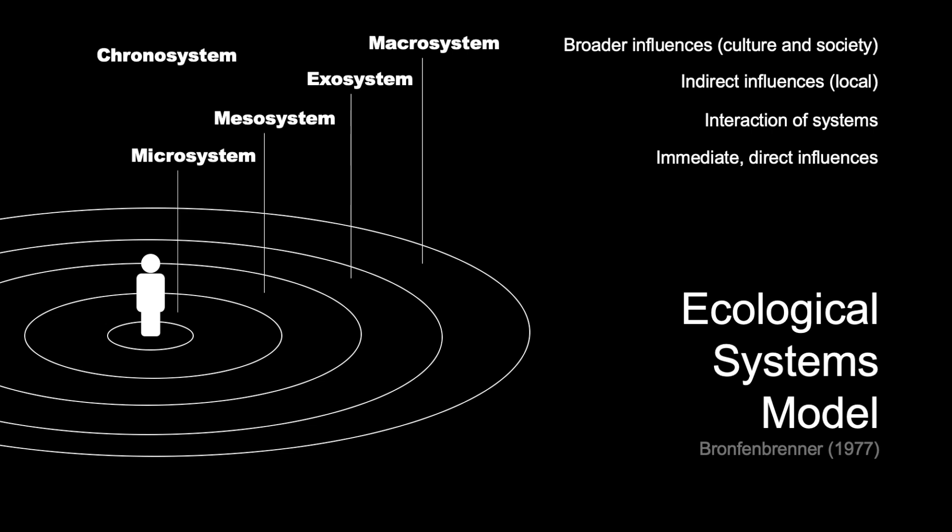This video is about Bronfenbrenner's ecological model. When you first look at the model, you might notice that it is conceptualized as a series of concentric circles. Each of these circles represents a system or a level. The five systems are the microsystem, mesosystem, exosystem, macrosystem, and chronosystem.